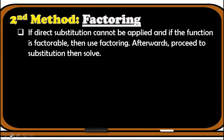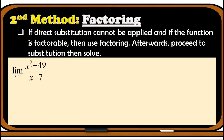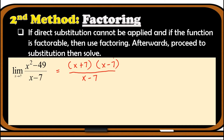First factoring problem: find the limit of x squared minus 49 over x minus 7 as x approaches 7. The numerator factors as x plus 7 times x minus 7 over x minus 7, applying the difference of squares. Cancel the common factor x minus 7, leaving x plus 7. Now apply direct substitution: 7 plus 7 gives us 14. So the limit of the function as x approaches 7 is 14.